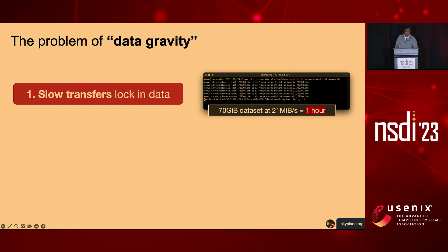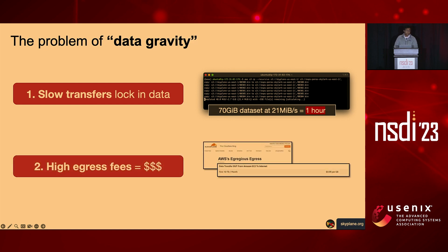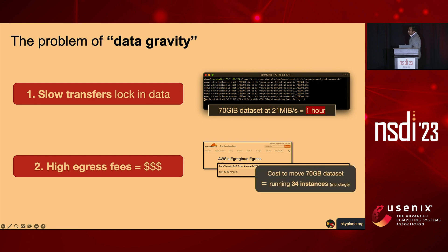The second component of data gravity in the cloud is high egress fees. The cloud charges anywhere from 9 to 19 cents per gigabyte to move data over the internet. These fees also apply even if you're moving data within a single region or between regions. Inner-zone traffic can cost anywhere from 1 to 2 cents per gigabyte, and cross-zone traffic can cost more. These costs end up rivaling the cost of compute in the cloud today. For an application deployed across GCP and AWS, the cost to move a 70-gigabyte dataset is equivalent to running a 34-node cluster for an hour.